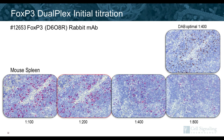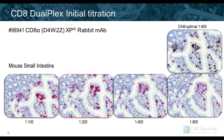The first step is initial titration of each primary antibody using each of the different chromogens. For FOXP3 on a mouse spleen, the DAB-optimized dilution was 1:400. A titration from 1:100 to 1:800 using the alkaline phosphatase red chromogen showed that approximately 1:200 matches well with the DAB optimal. For CD8 on small intestine, similarly optimized at 1:400 with DAB, 1:200 with the alkaline phosphatase red chromogen showed matching signal intensity and specificity.